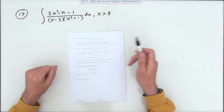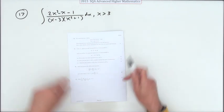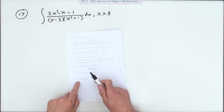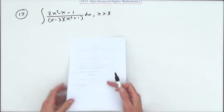Number 17, from the 2015 Advanced Higher Mathematics question, is a fairly harmless looking thing. This is for nine marks and it looks fairly straightforward.